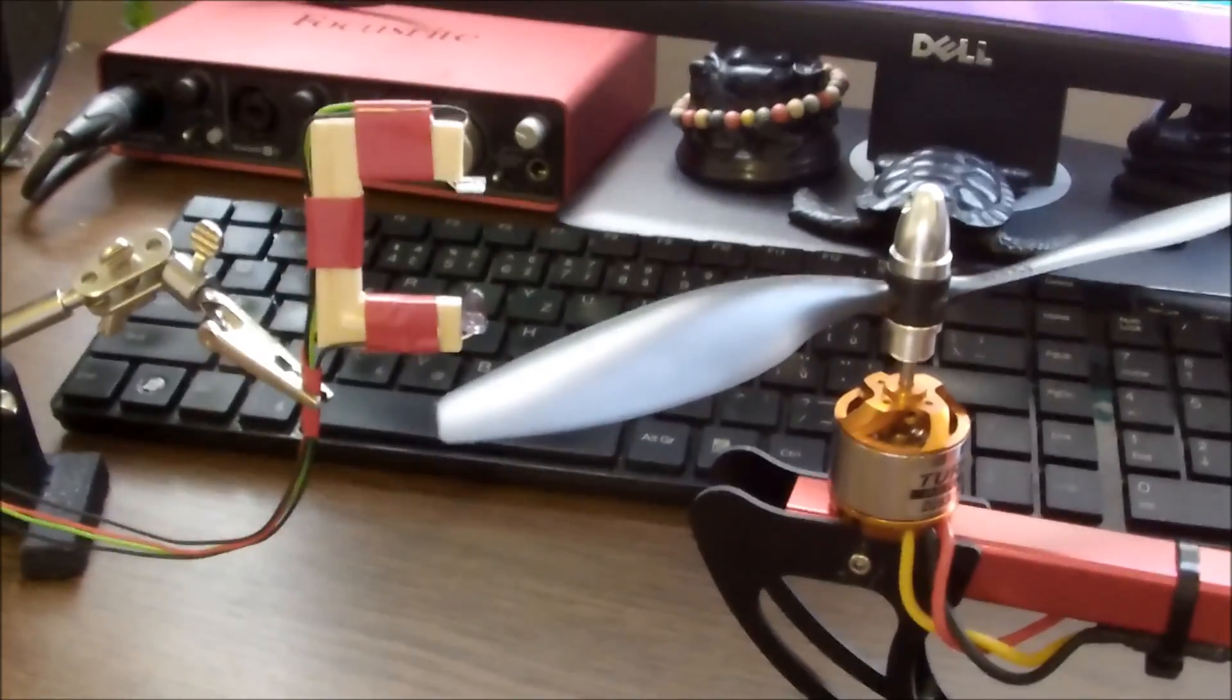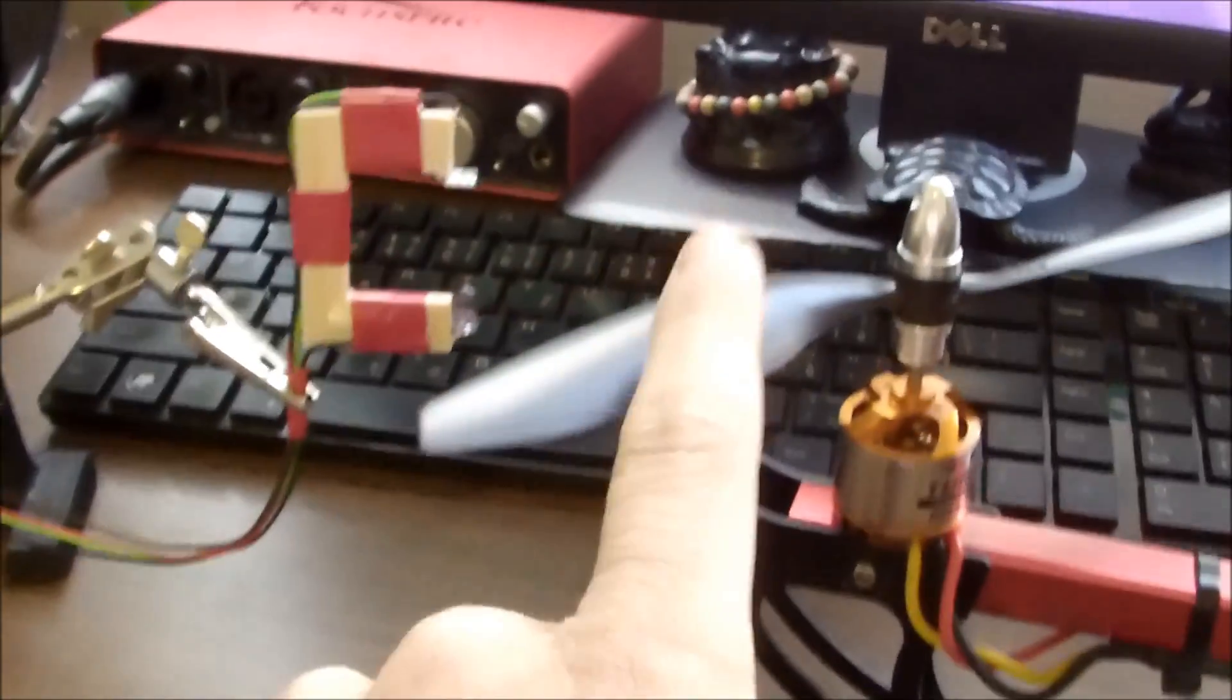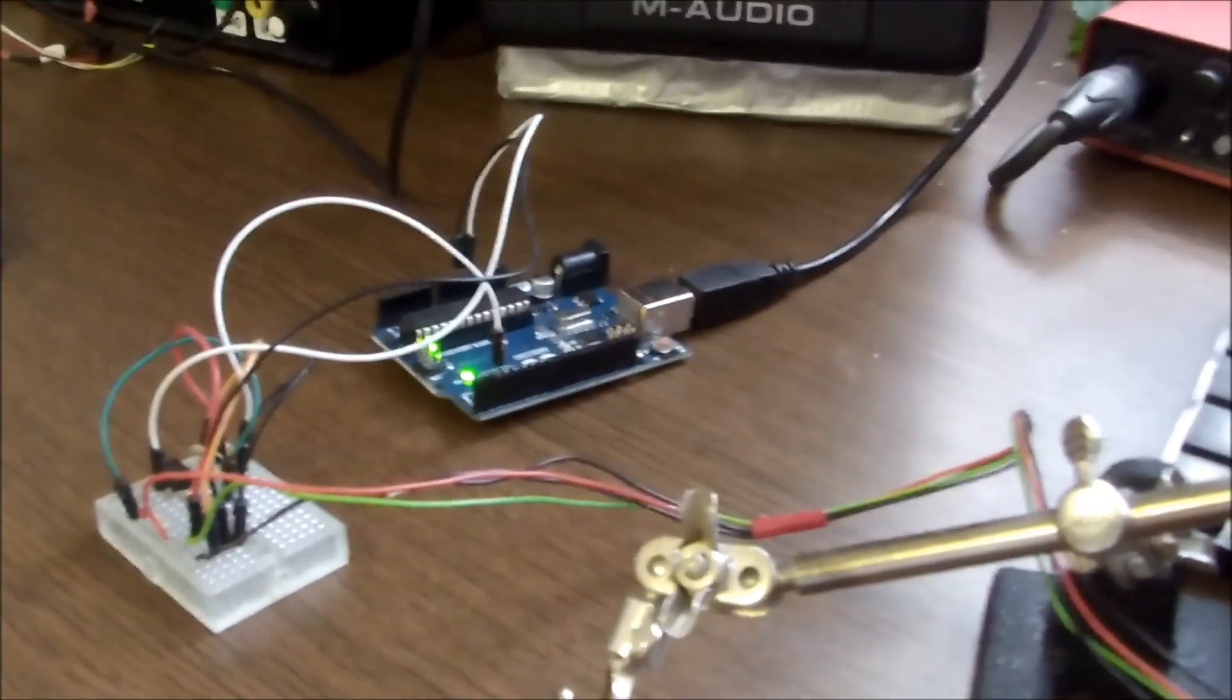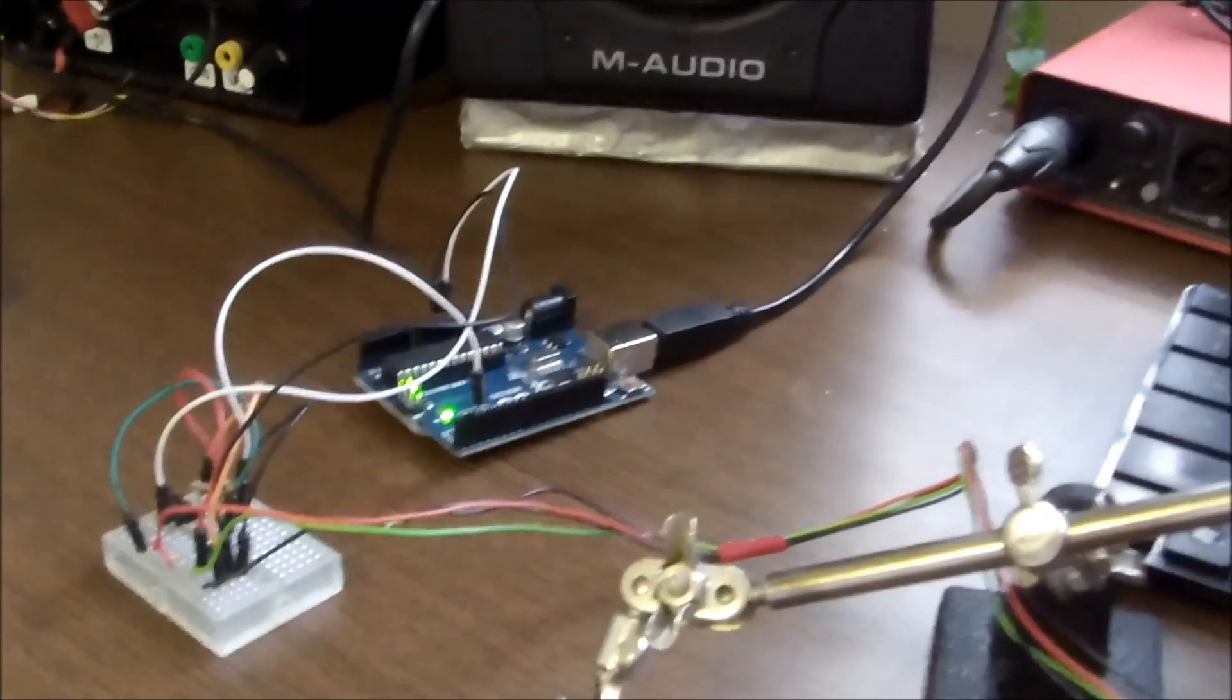Hey guys, this is a tutorial on how to make a simple propeller RPM counter or tachometer using a bit of hardware and a microcontroller. I'm specifically going to provide the code for the Arduino but you can apply it easily to any other microcontroller that you're using.